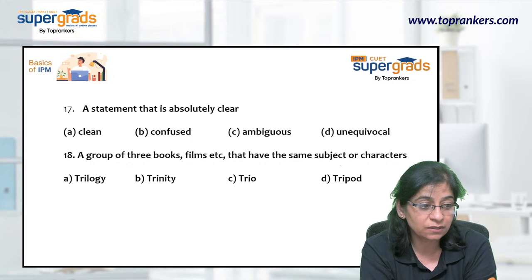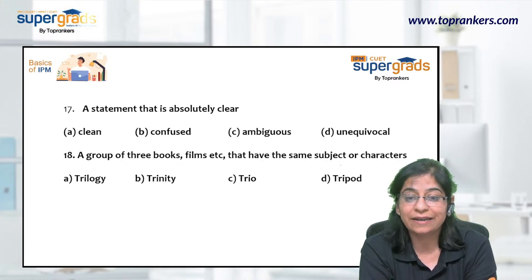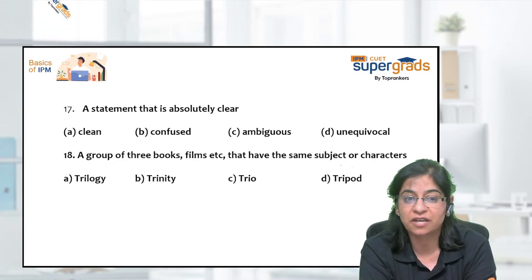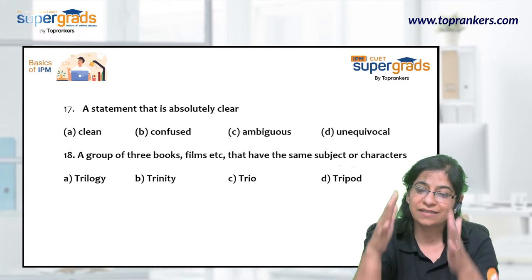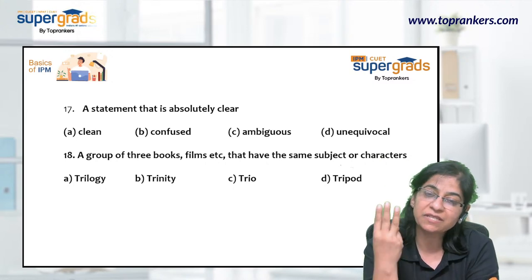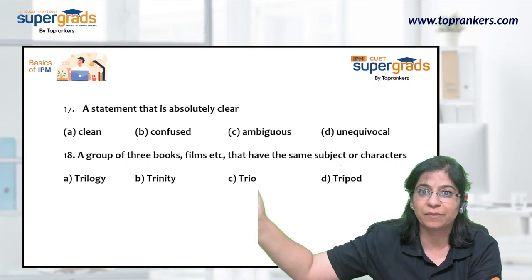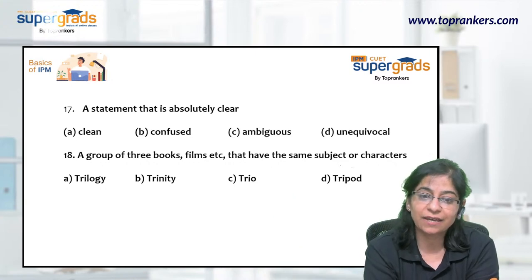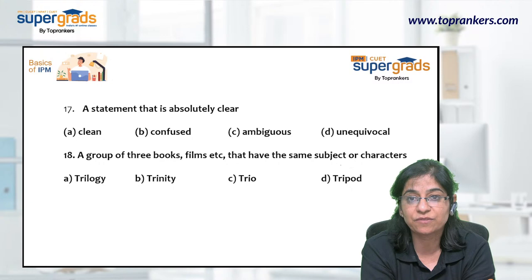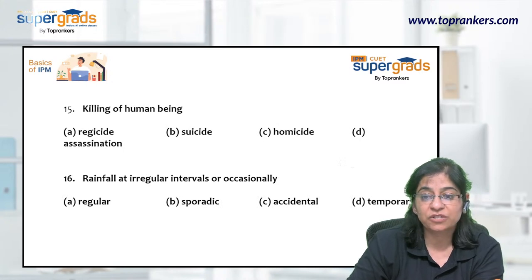Next: 'A group of three books or films that have the same subject or characters.' Options are: trilogy, trinity, trio, and tripod. Tripod is the three-legged stand for cameras or lamps. Trio simply means a group of three — perhaps three people playing music. Trinity refers to a group of three divine beings. Trilogy is the answer — a group of three books or films with the same subject, each being a sequel to the previous. The answer to question 15 is trilogy.